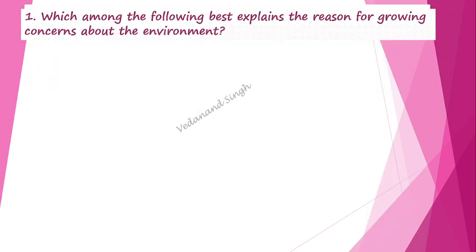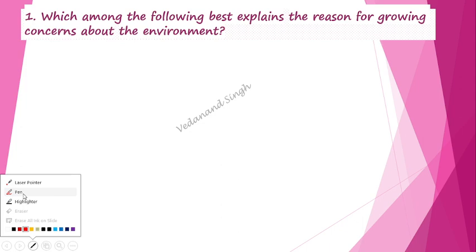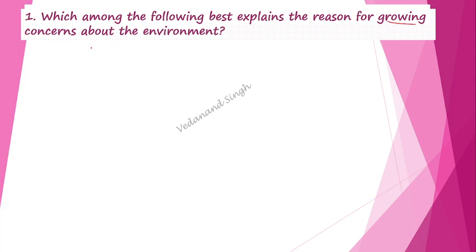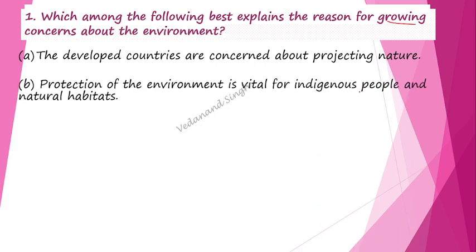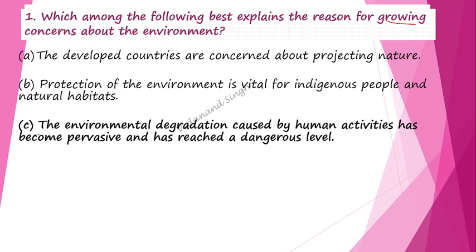The first question is an explaining question: which among the following best explains the reason for growing concern about the environment? The options are: developed countries projecting nature; protection of environment is vital for indigenous peoples and natural habitat; environmental degradation caused by human activities has become pervasive and reached a dangerous level; or none of the above. Option C is the correct answer.